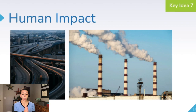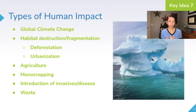There are lots of different types of human impact — global climate change, habitat destruction and fragmentation, agriculture, monocropping, introduction of invasive or diseased species, and waste and pollution. Being familiar with at least a few of these and understanding the overall impacts of humans on the environment is going to be key in your living environment review.